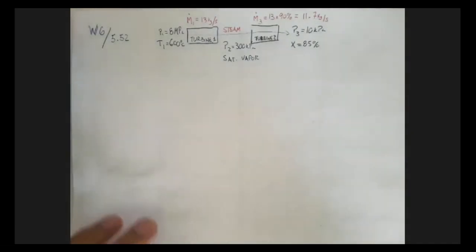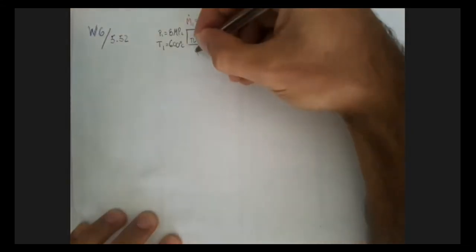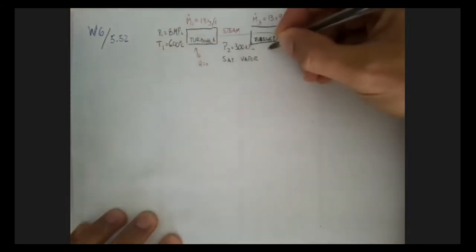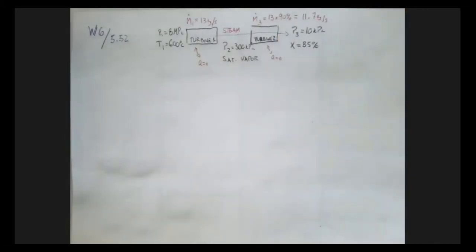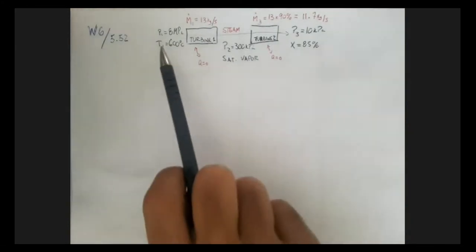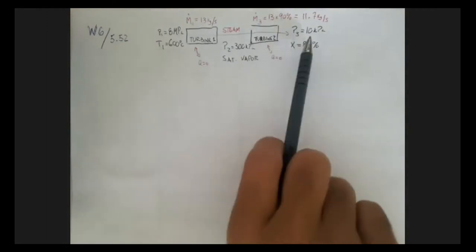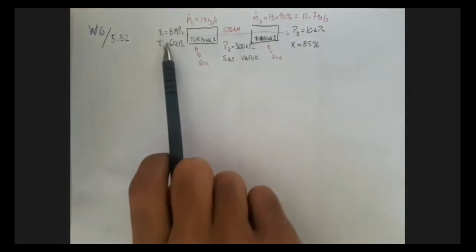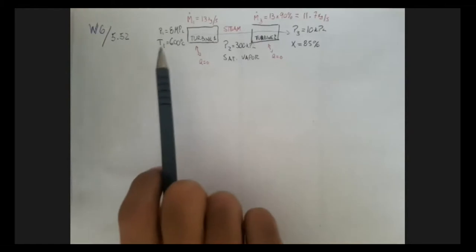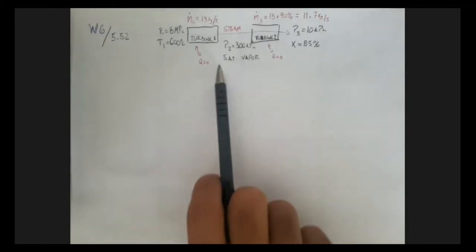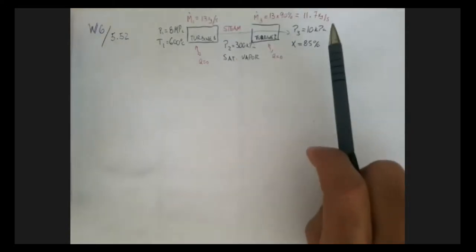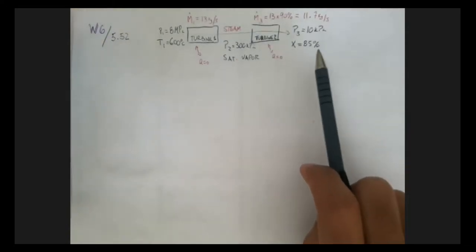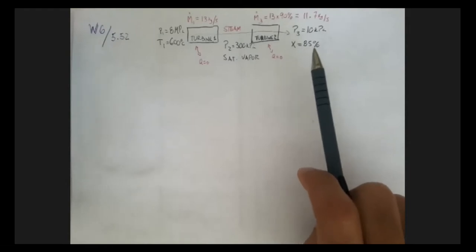There is no heat going in or out of the system because these are adiabatic processes. Also, all three states are fully defined: state 1 has pressure and temperature, state 2 has pressure and is specified as saturated vapor, and state 3 has pressure and quality — so we know it's a mixture with 85% vapor and 15% liquid.